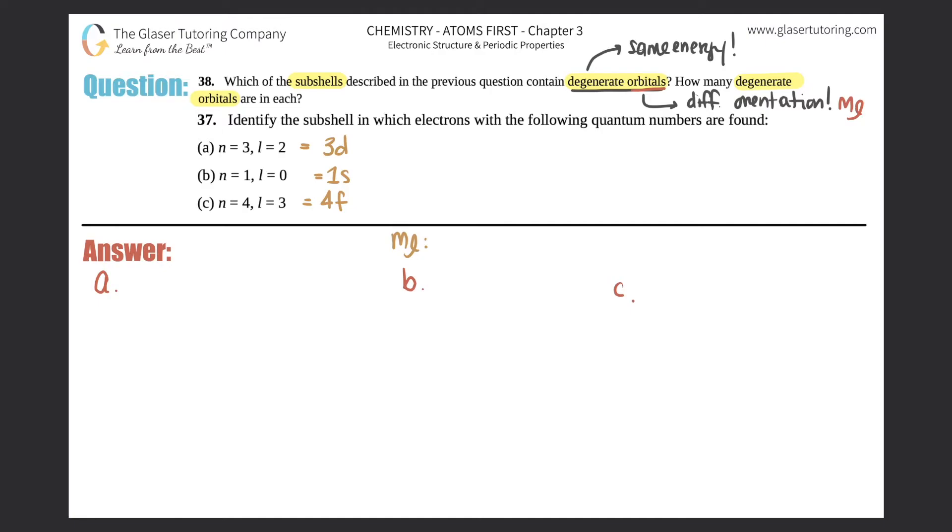Now I'm going to put up here: how do we find the ml? The ml is always taken from the l value, the angular momentum. It's always negative l all the way to positive l. Now if you find out an ml value and you have more than one number, voila, you have degenerate orbitals, right?